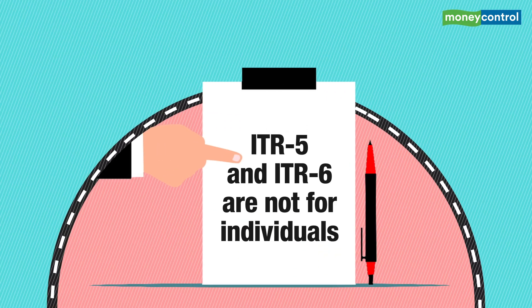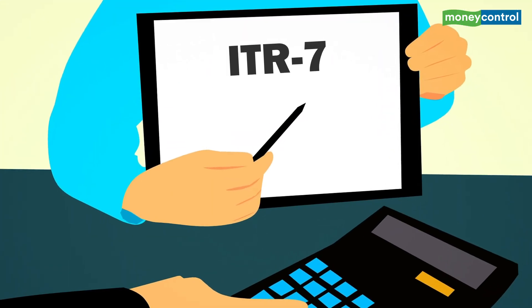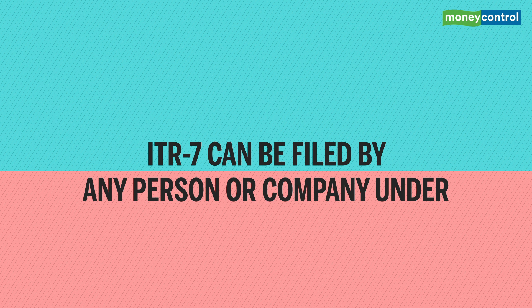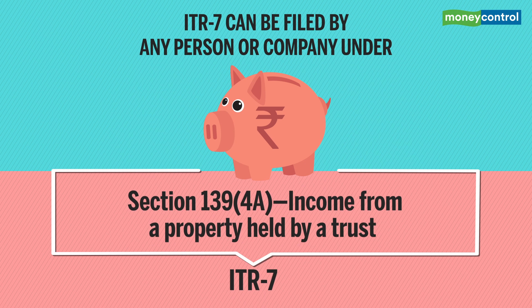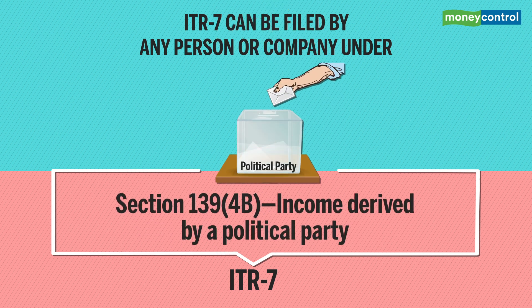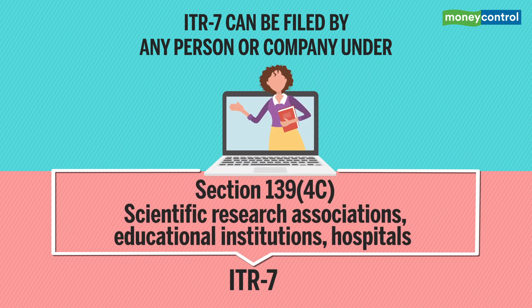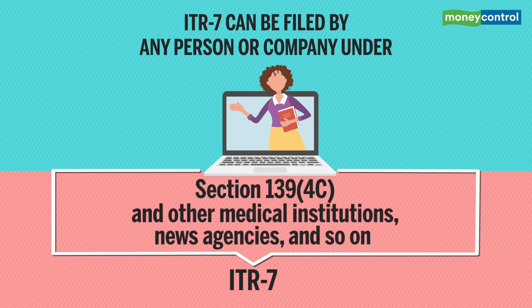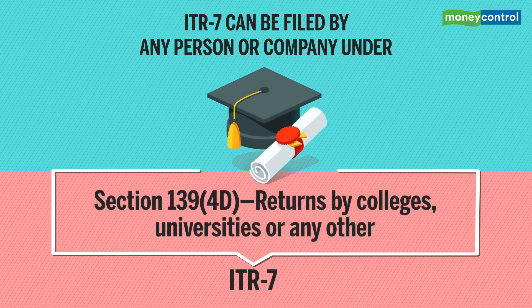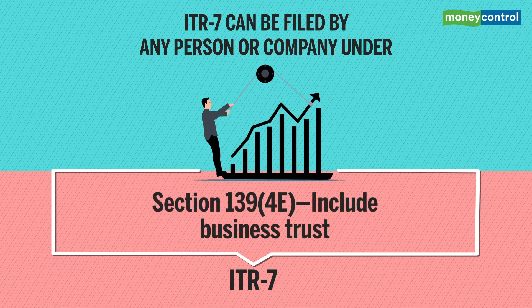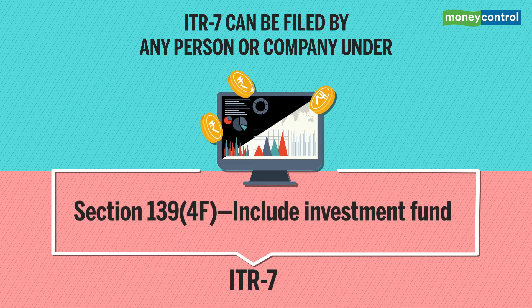ITR-5 and ITR-6 are not for individuals. ITR-7 can be filed by any person or company required to file a tax return under Section 139(4A) — income from property held by a trust for charitable or religious purposes; Section 139(4B) — income derived by a political party; Section 139(4C) — entities such as scientific research associations, educational institutions, hospitals and other medical institutions, news agencies, and so on; Section 139(4D) — returns by colleges, universities or any other institution; Section 139(4E) — business trust; and Section 139(4F) — investment fund.